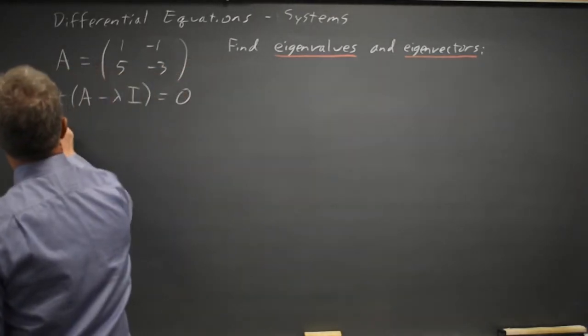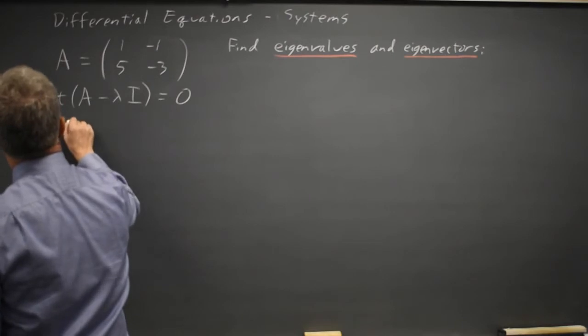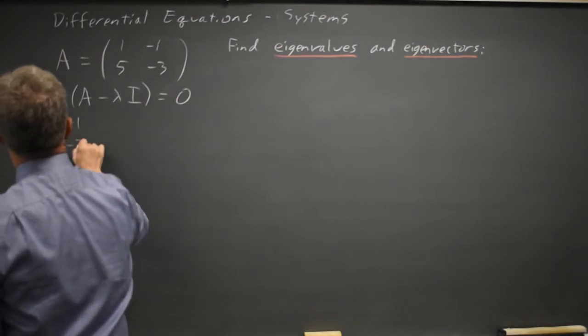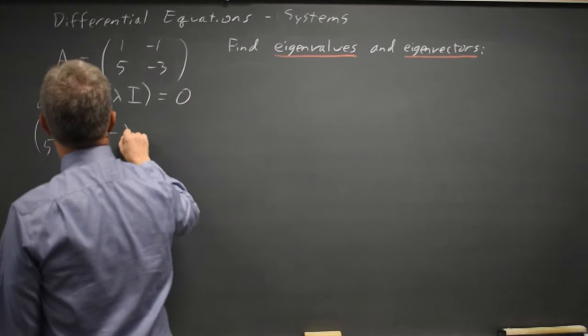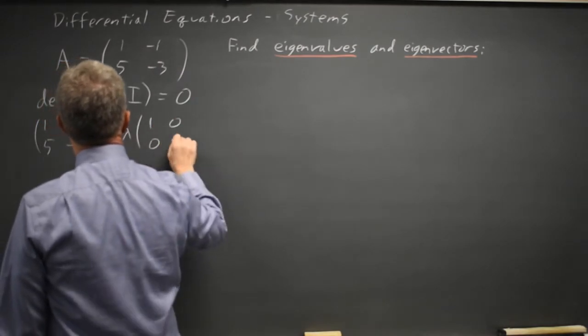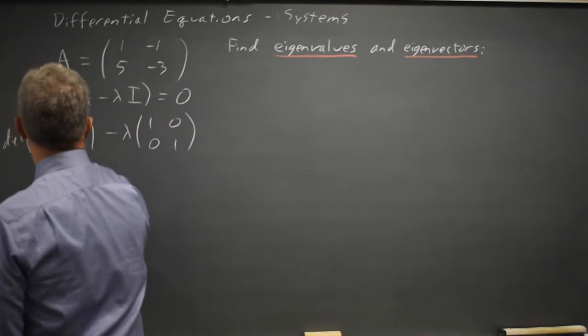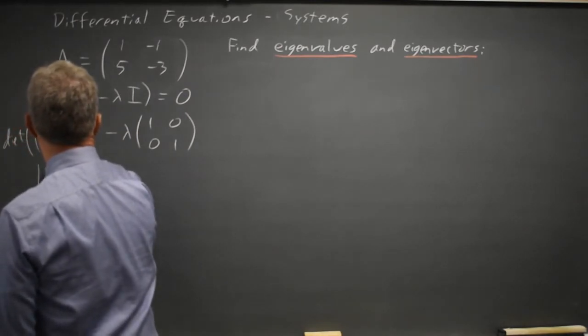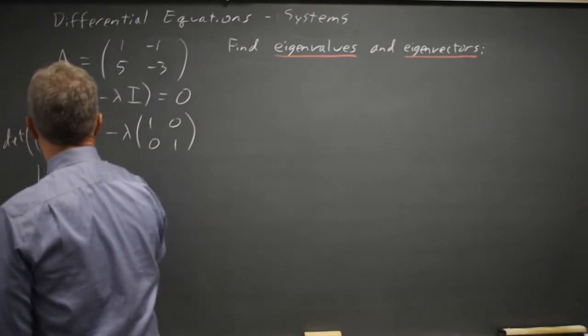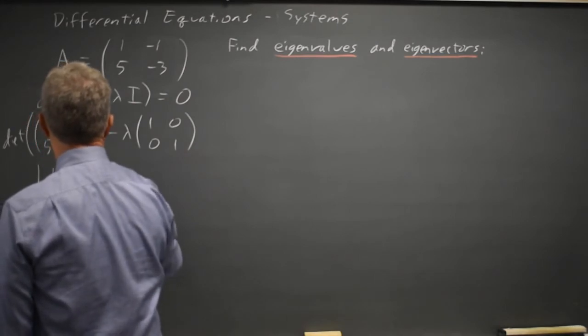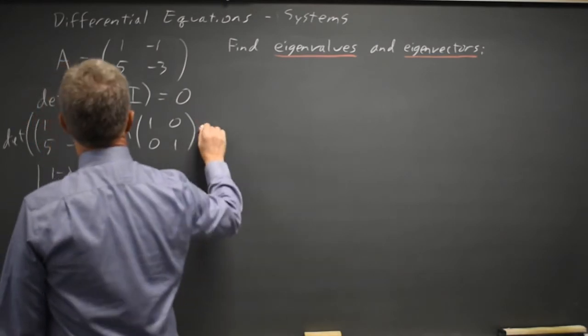So that is [1, -1; 5, -3] minus lambda times [1, 0; 0, 1], and I'm taking the determinant, which I can write as determinant of [1 minus lambda, -1; 5, -3 minus lambda], and this is equal to 0.